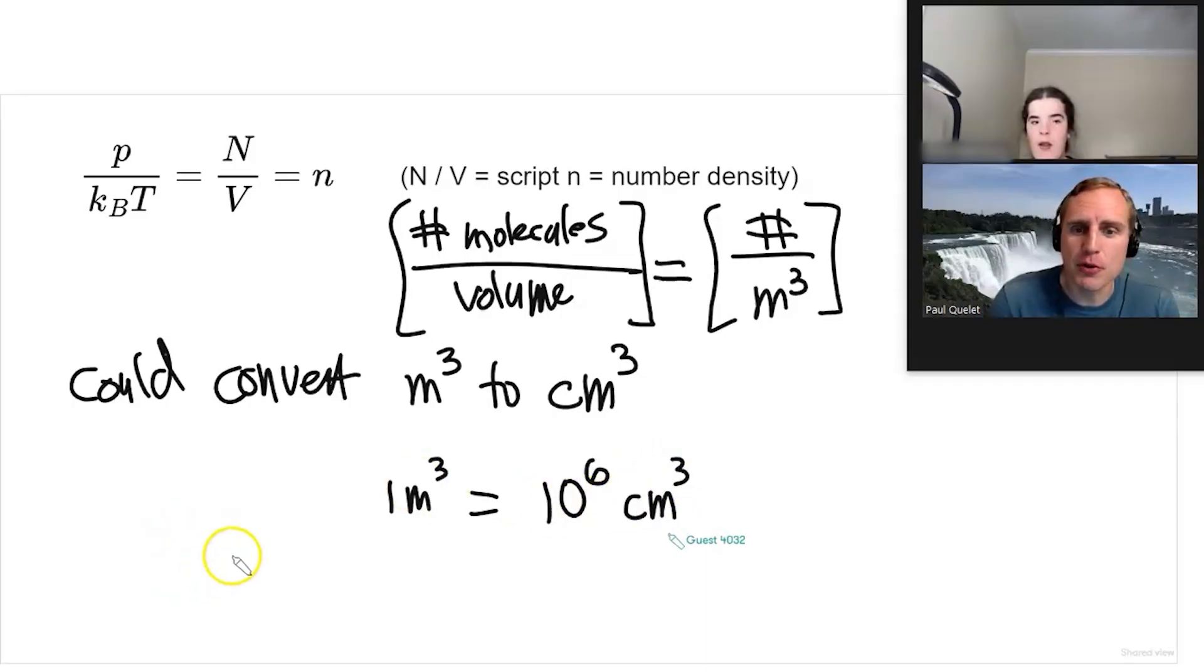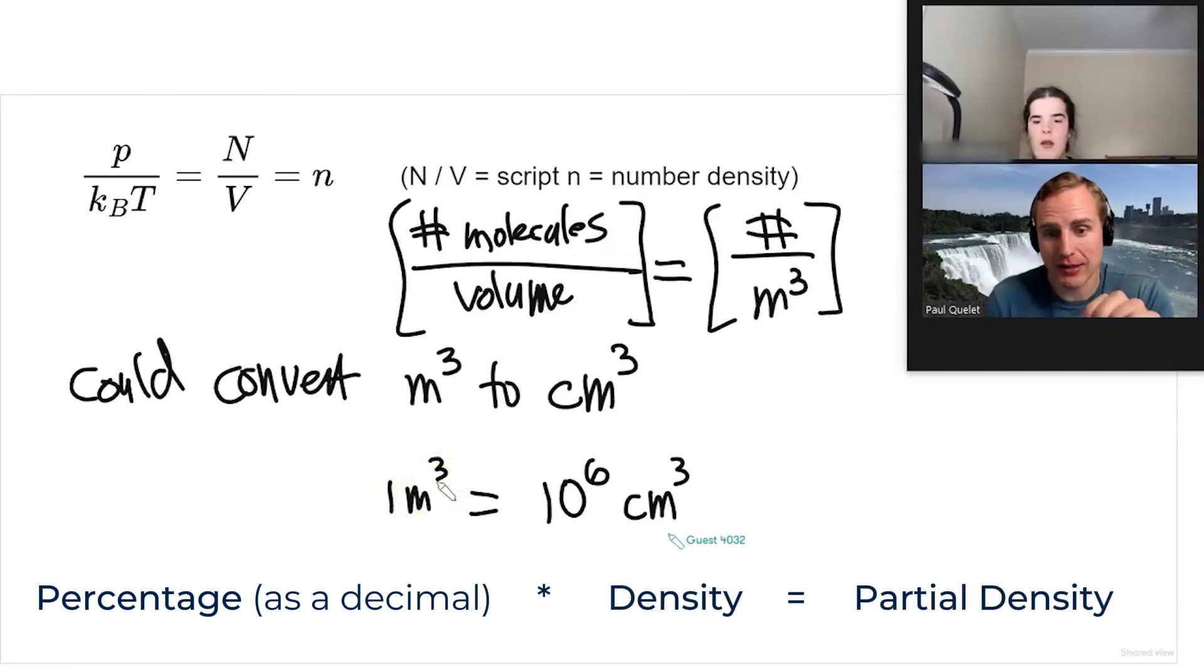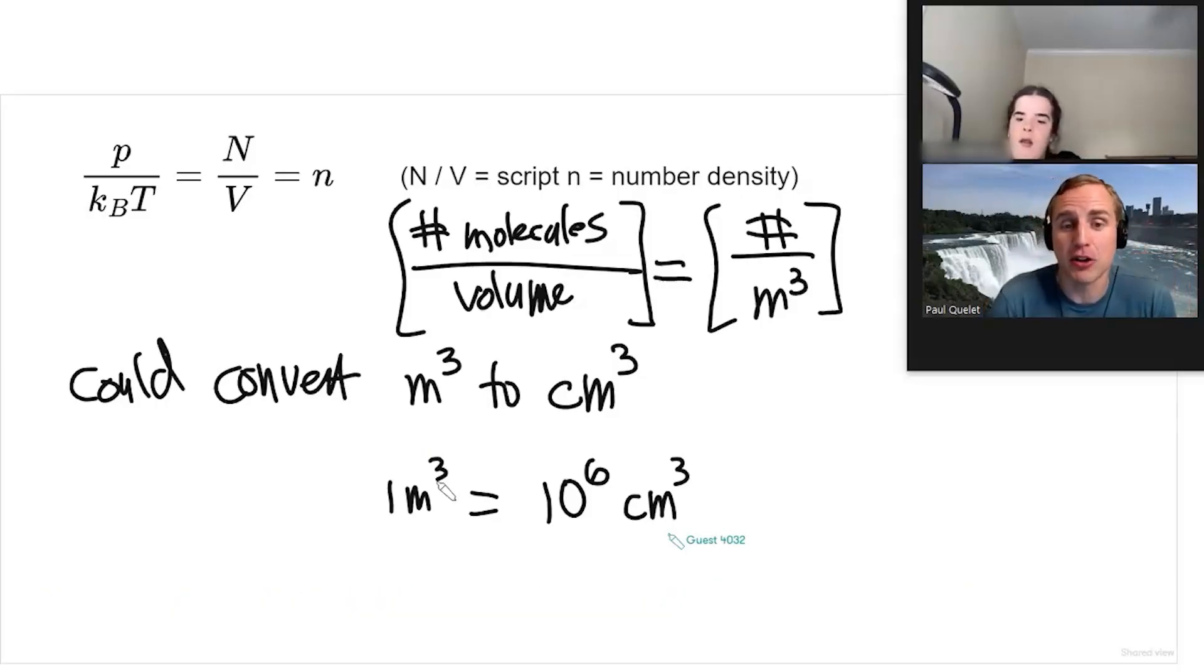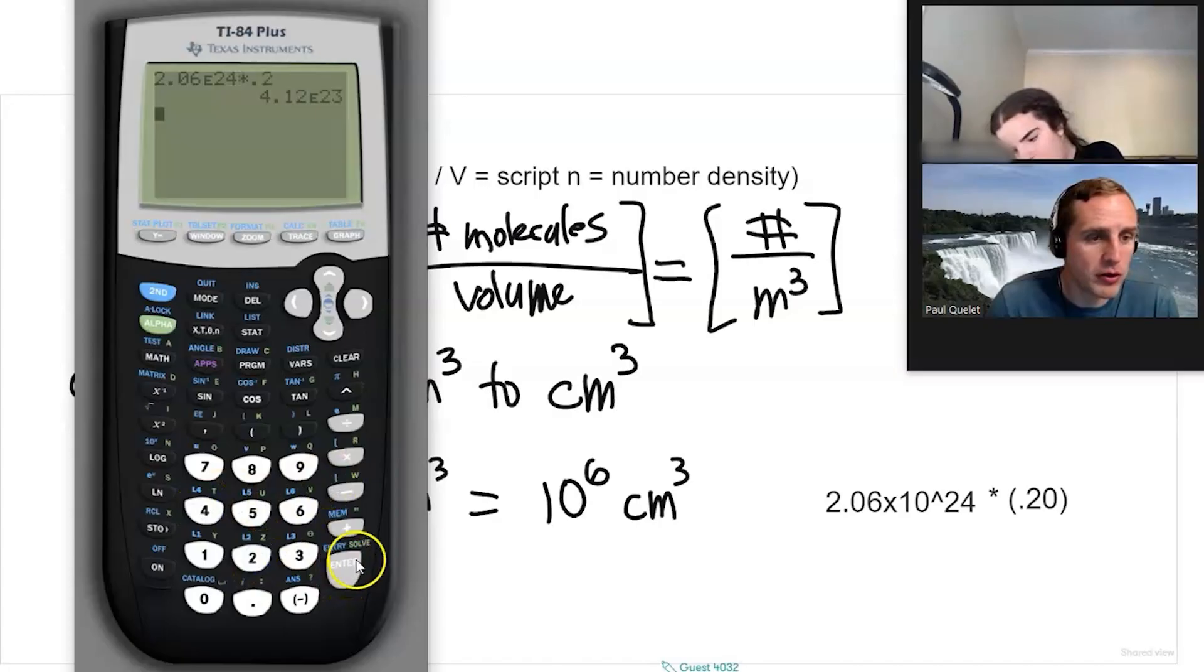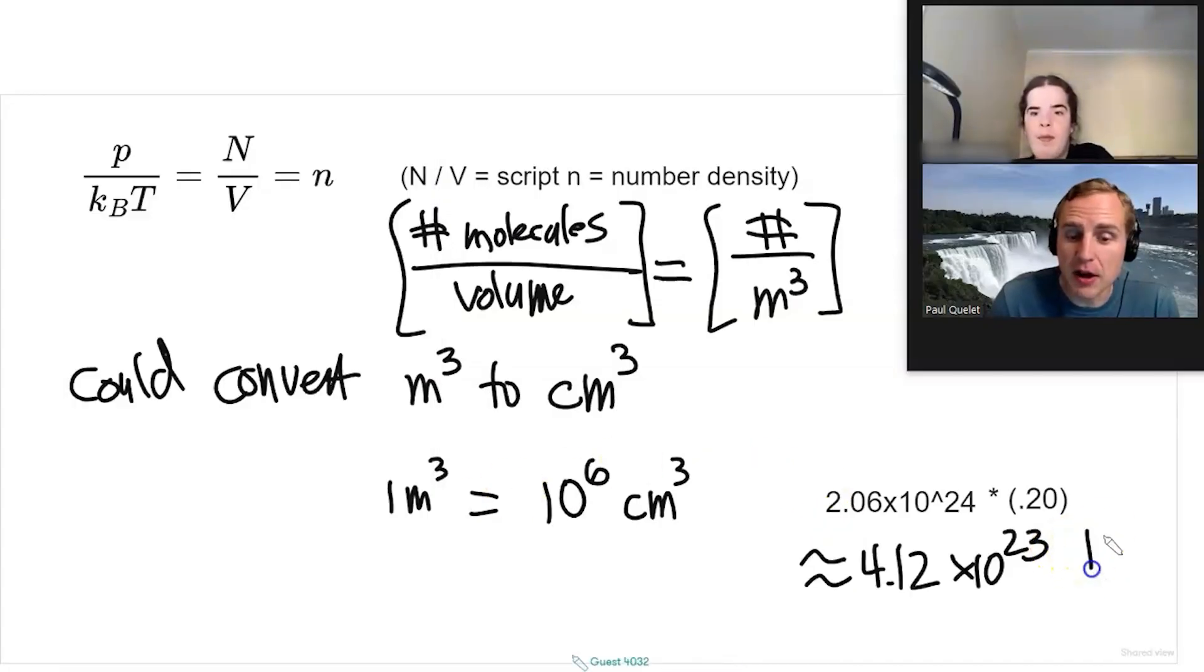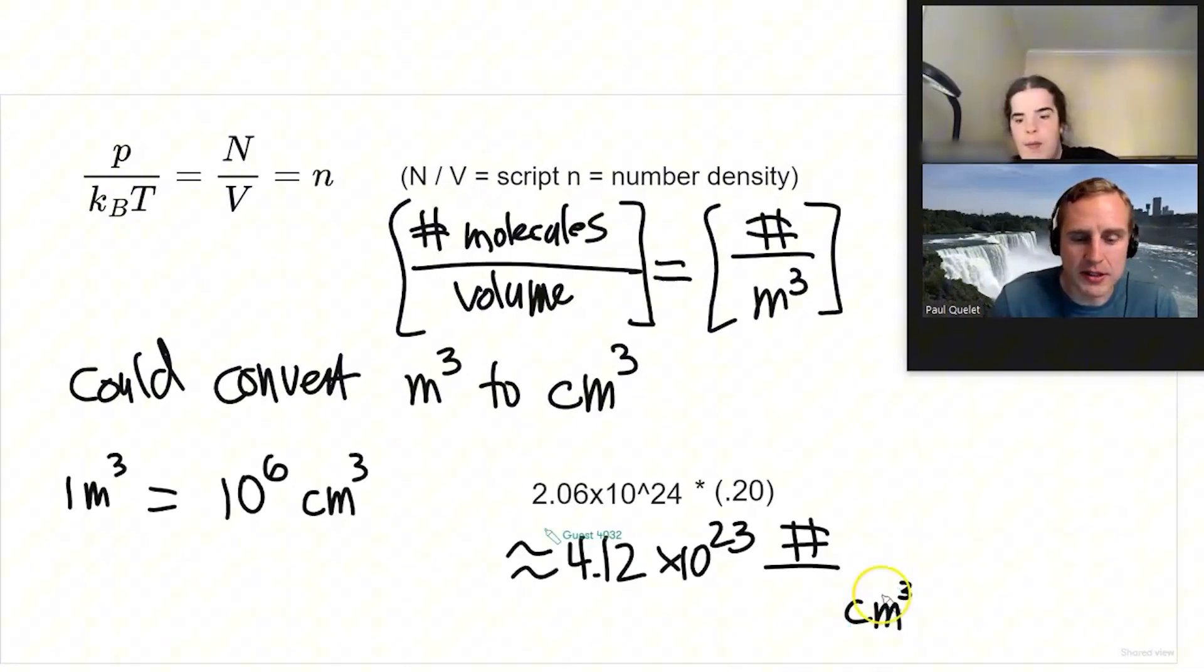If you know the percent of a chemical by volume, you take its percentage as a decimal and multiply it by the density and you get the partial density. So you get the number density of just those molecules. It's going to be 4.12 times 10 to the 23rd. That's going to be units of number per cubic centimeter.